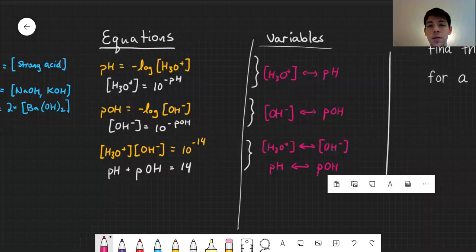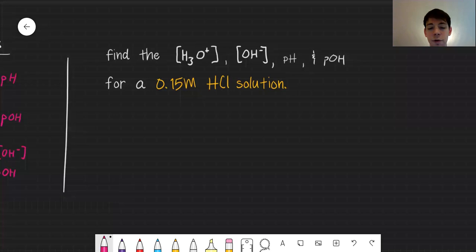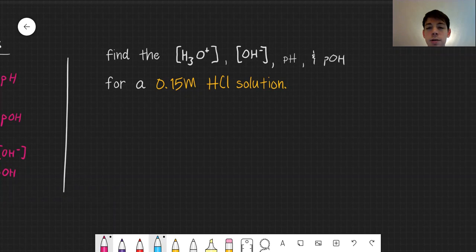I want you to write those down, keep them somewhere handy. Let's see if we can use some of these to solve a problem where we're asked to solve for all of those variables. The question says, find the hydronium concentration, hydroxide concentration, pH and pOH for a 0.15 molar HCl solution. First thing I note, this is an acid, it's a strong acid.